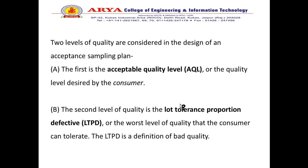There are two levels. The first is AQL, Acceptance Quality Level, which means the quality level desired by the consumer is high. The second is LTPD, Lot Tolerance Proportion Defective, which means the consumer compromises the quality levels.